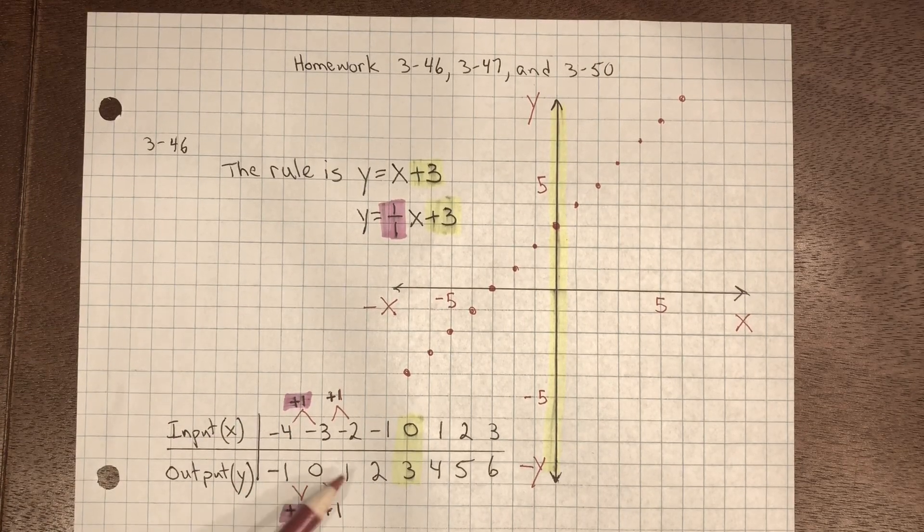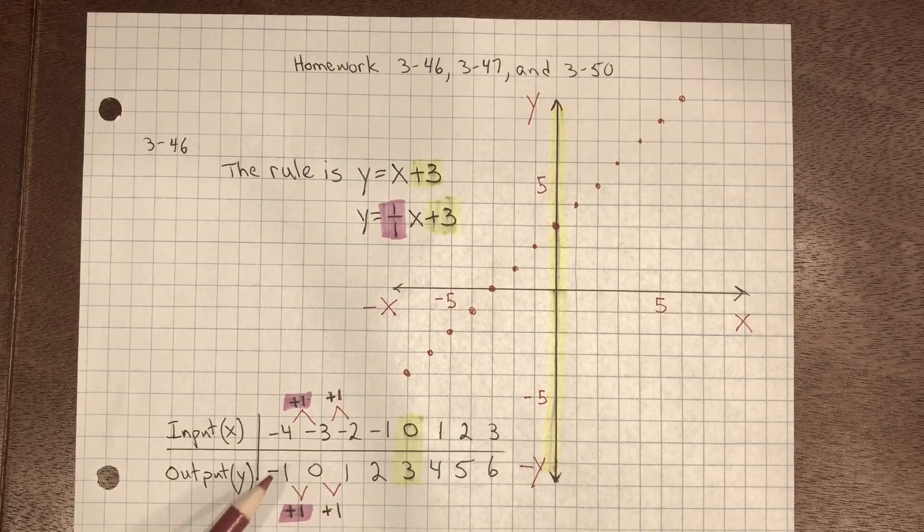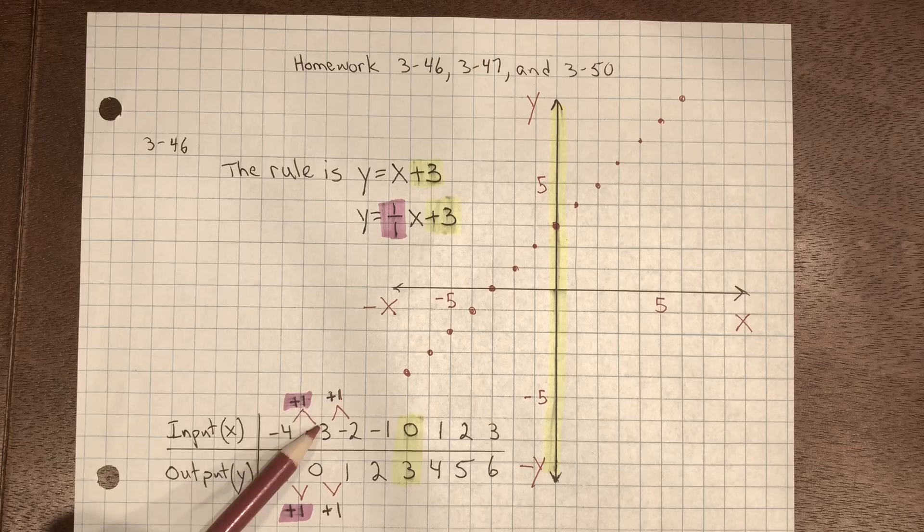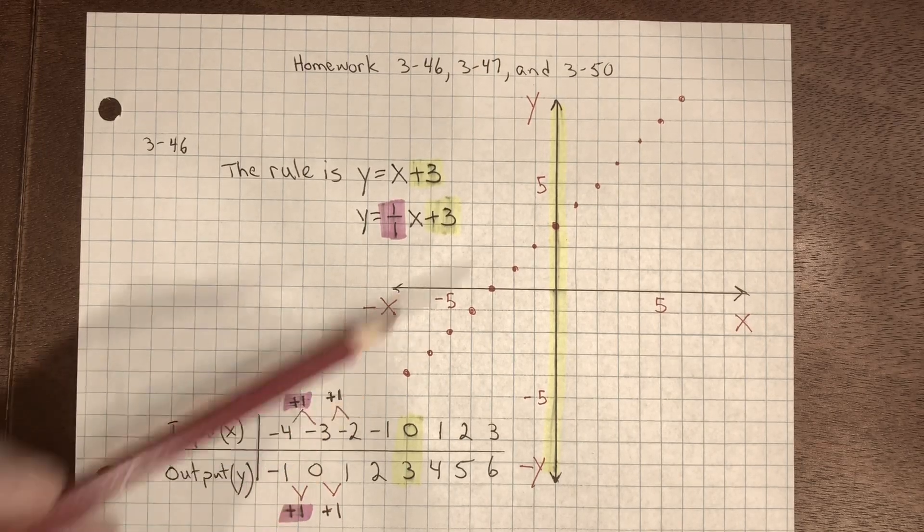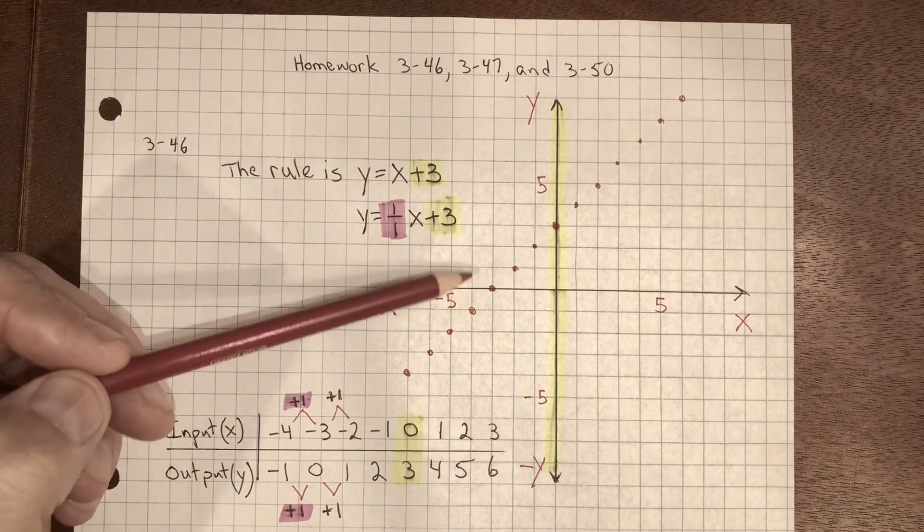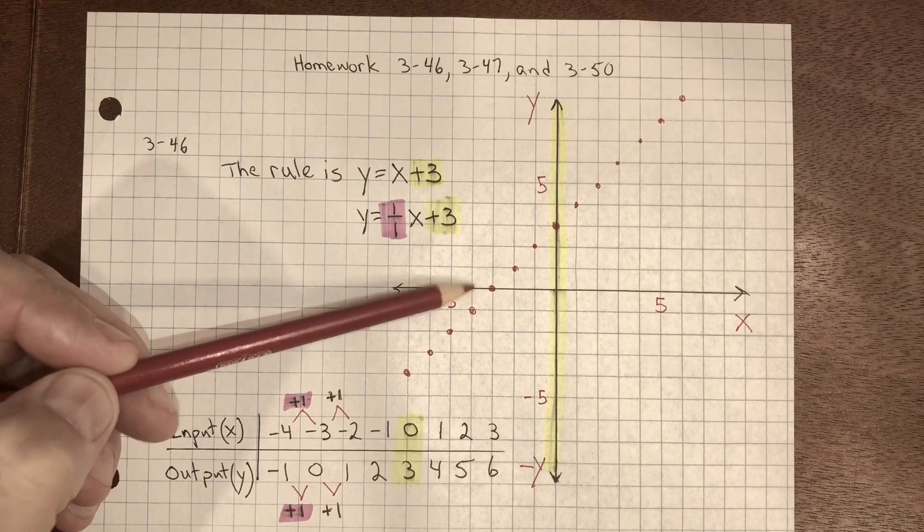If I look at the rate of change, we can see that it's a constant rate of change for every one on the x, one on the y. You can see that in the graph as well.